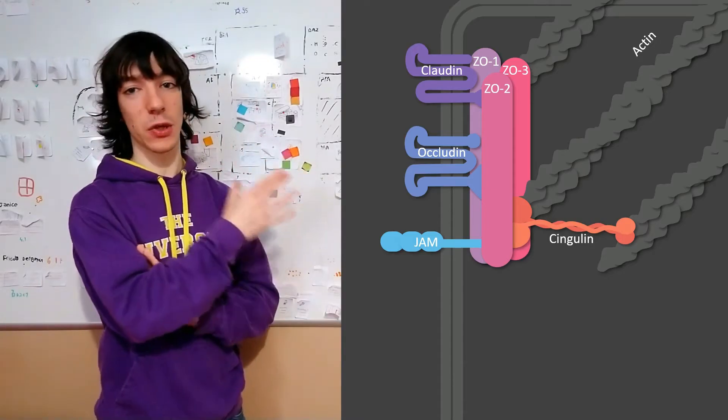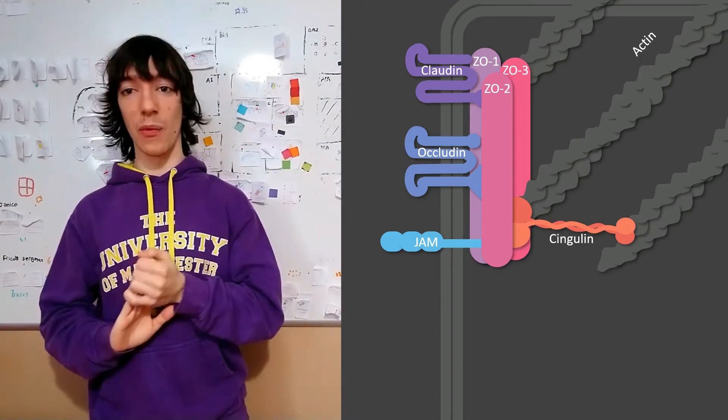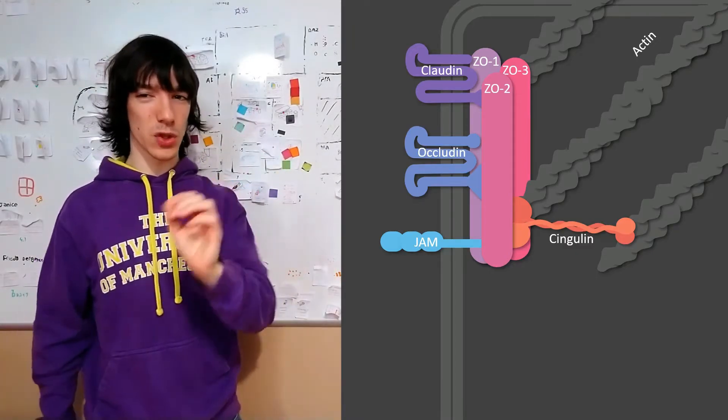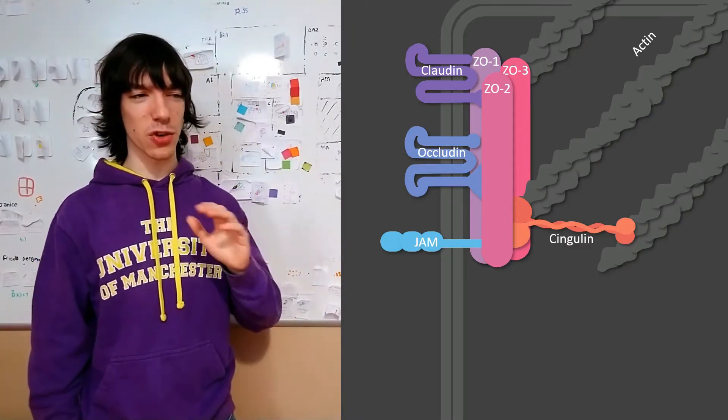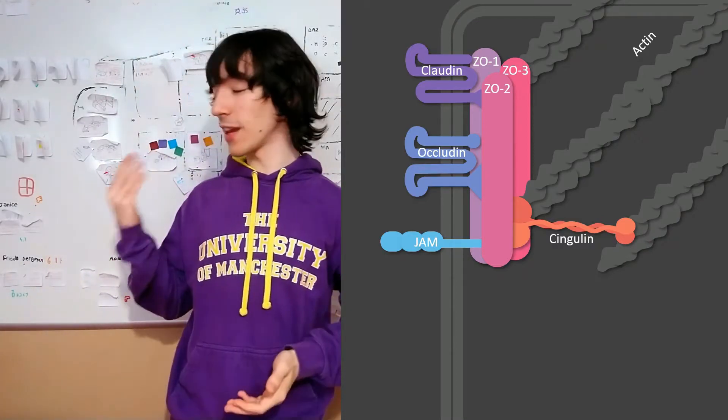This is the classic idea that you will find in most books and I think that's enough for most university courses. And with that, we have a tight junction. There's one last detail I wanted to mention. It's not directly related to tight junctions or their function of maintaining asymmetry, but it's interesting.